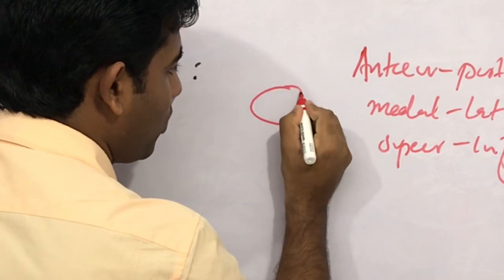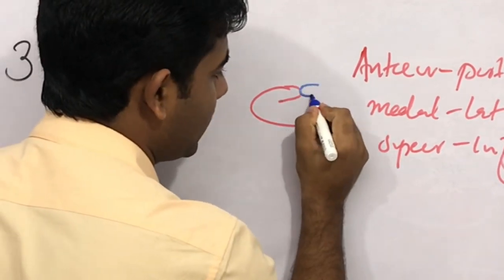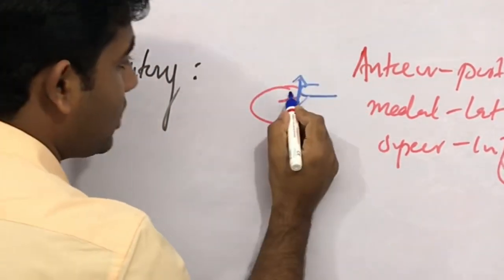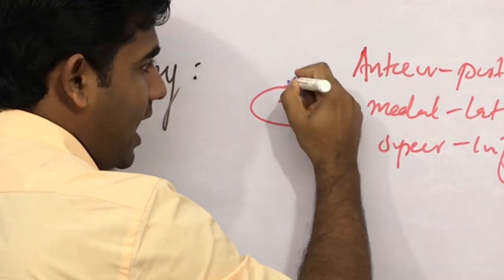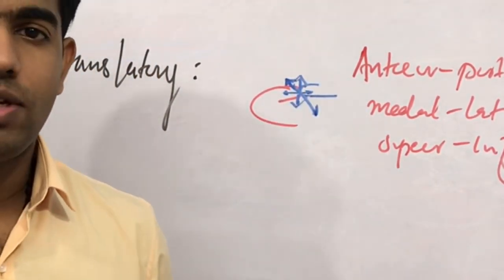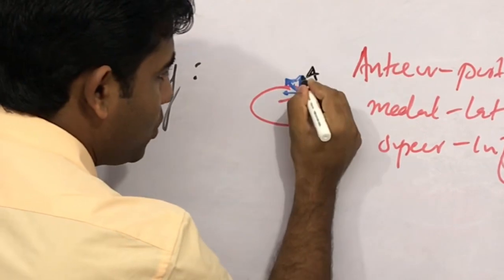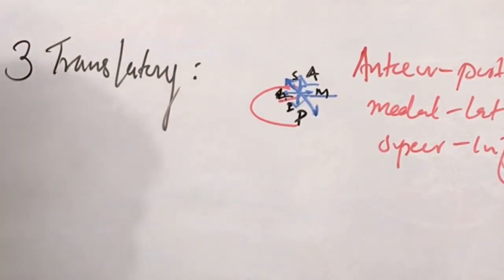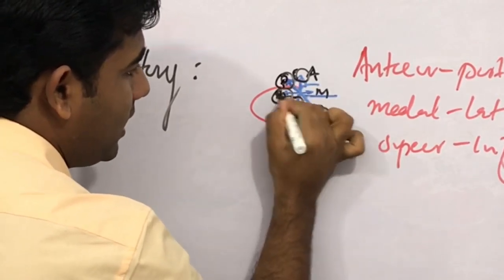For example, if this is the acromion process and here you have the clavicle, what can happen is that it can translate superiorly and inferiorly with a slight translatory movement. It can translate very minimally in the medial and lateral direction, and it can also translate anteriorly and posteriorly. So those are the three translatory motions in the acromioclavicular joint.